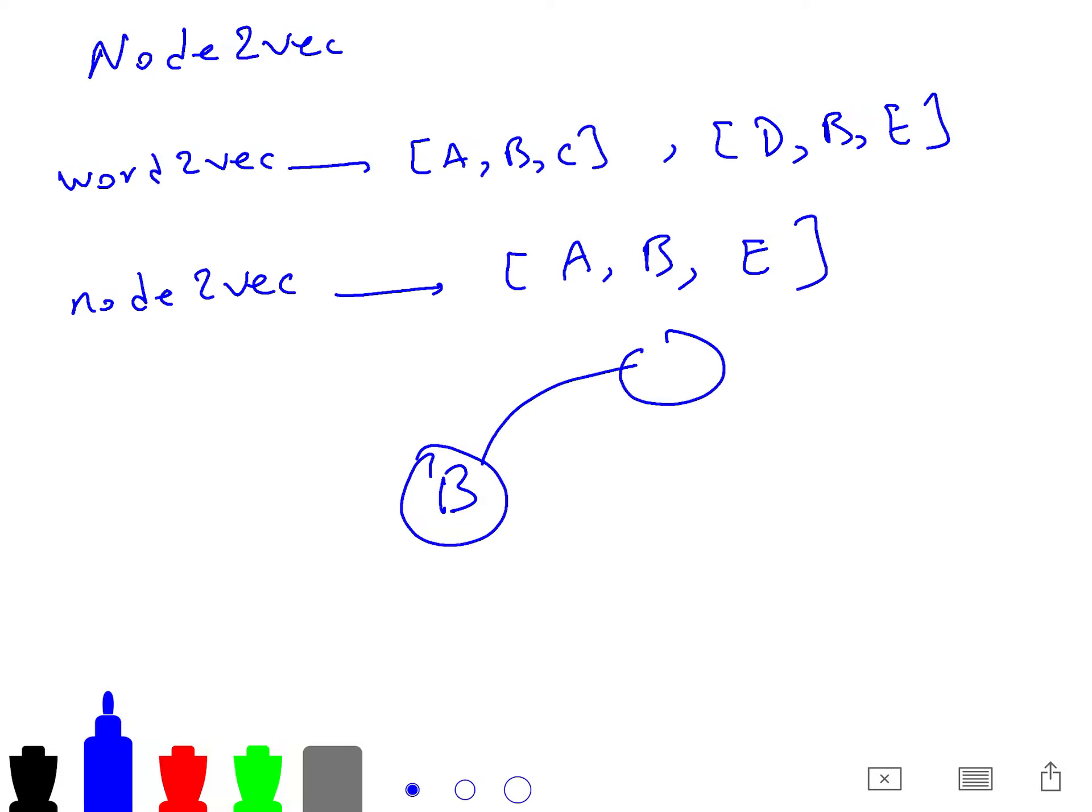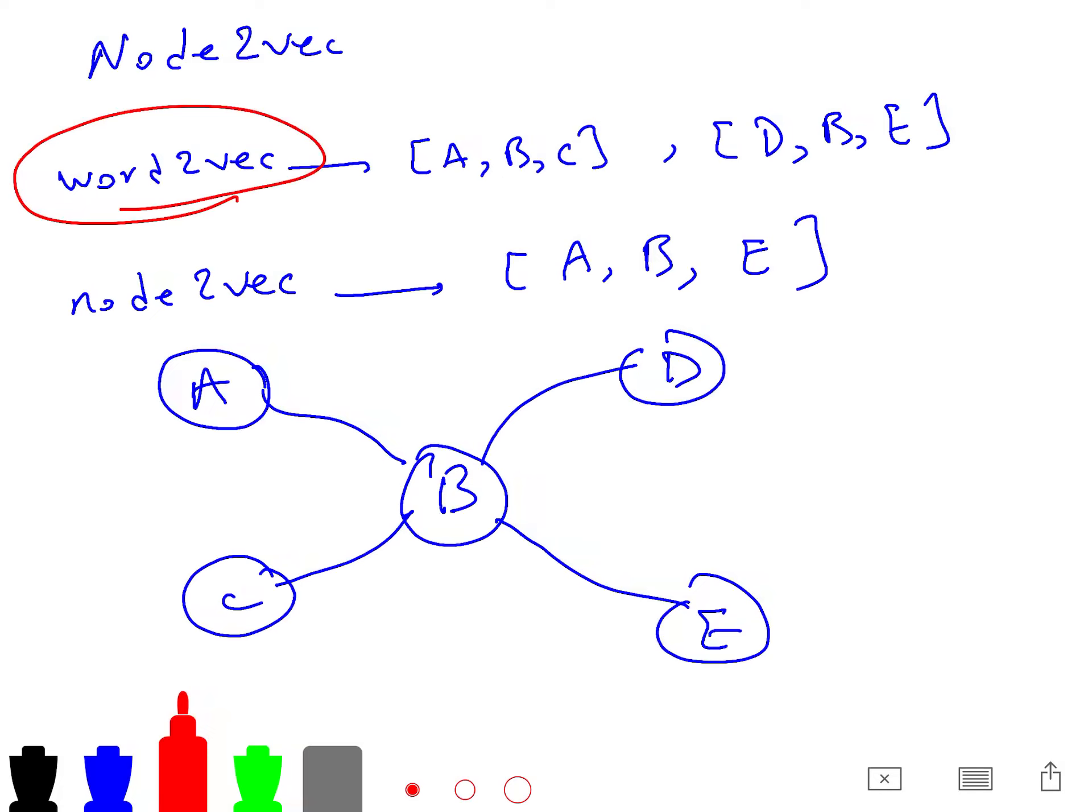So if this is the graph, in Word2Vec you can go say A, B, C, and then or D, B, E, different moves. But in Node2Vec, you can capture A, B, and E, and you can go other way as well.